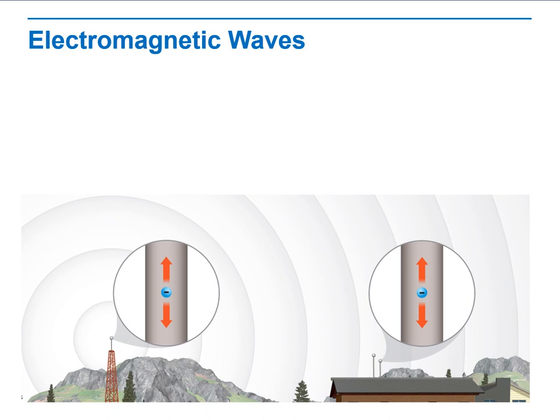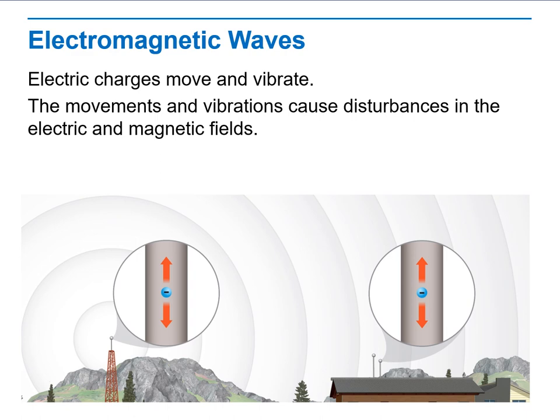Now, let's talk about electromagnetic waves. Electric charges undergoing periodic motion can affect the motion of other charges through electric and magnetic fields. What is the meaning of periodic pattern?